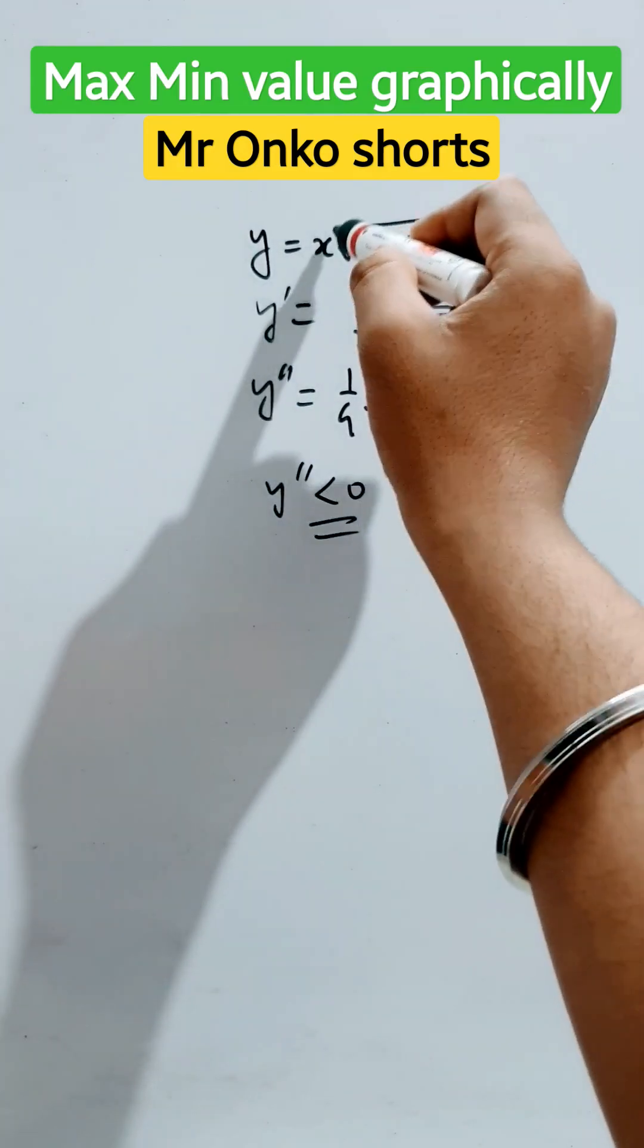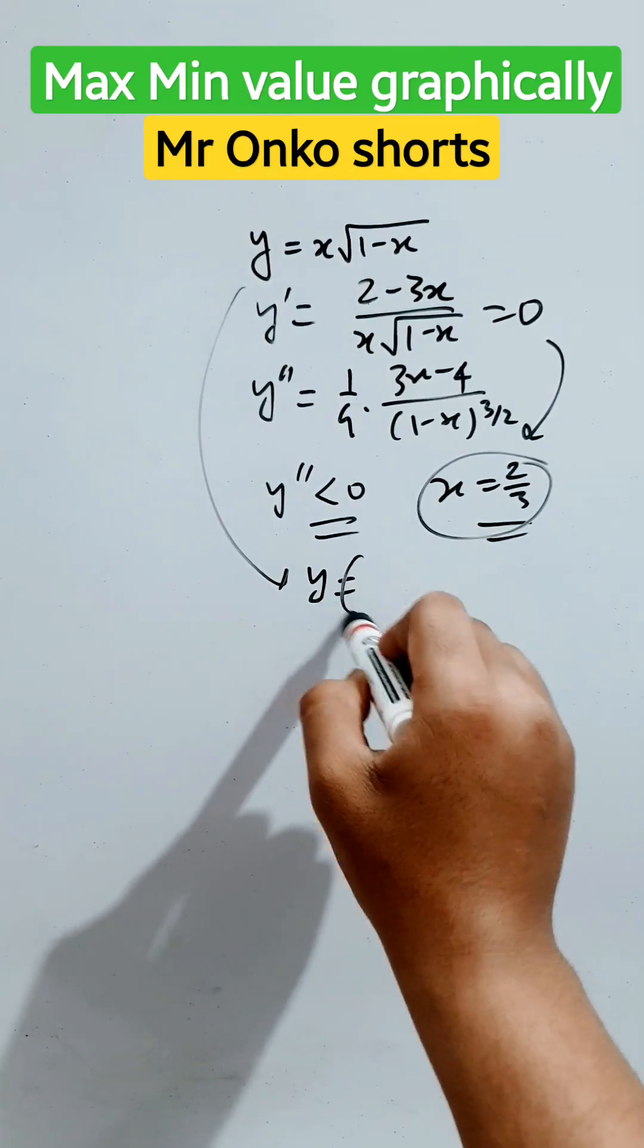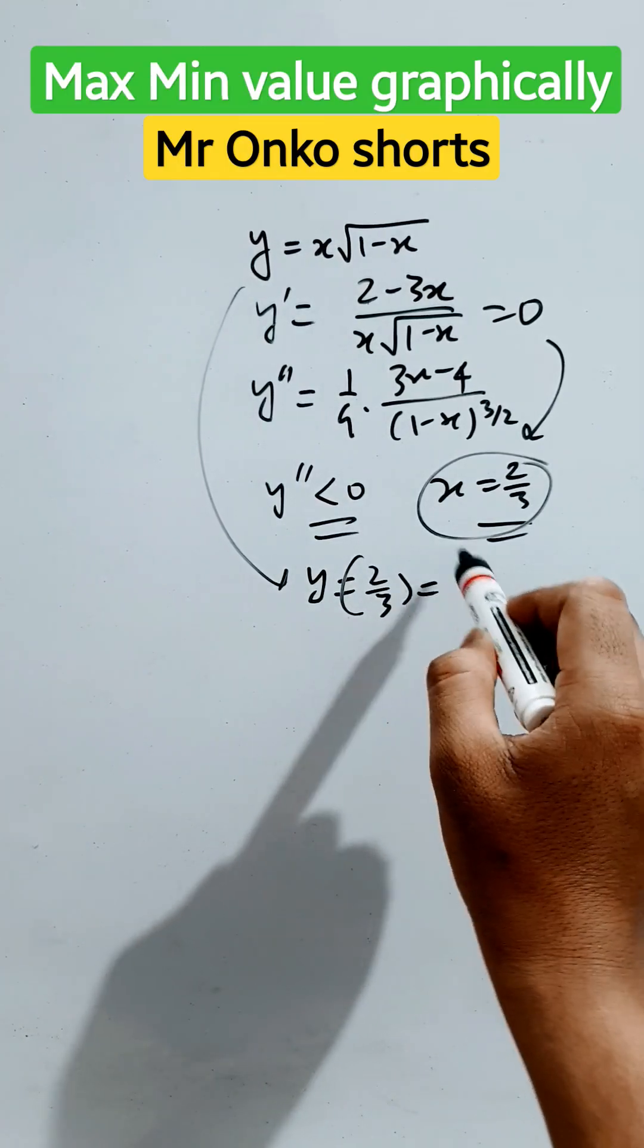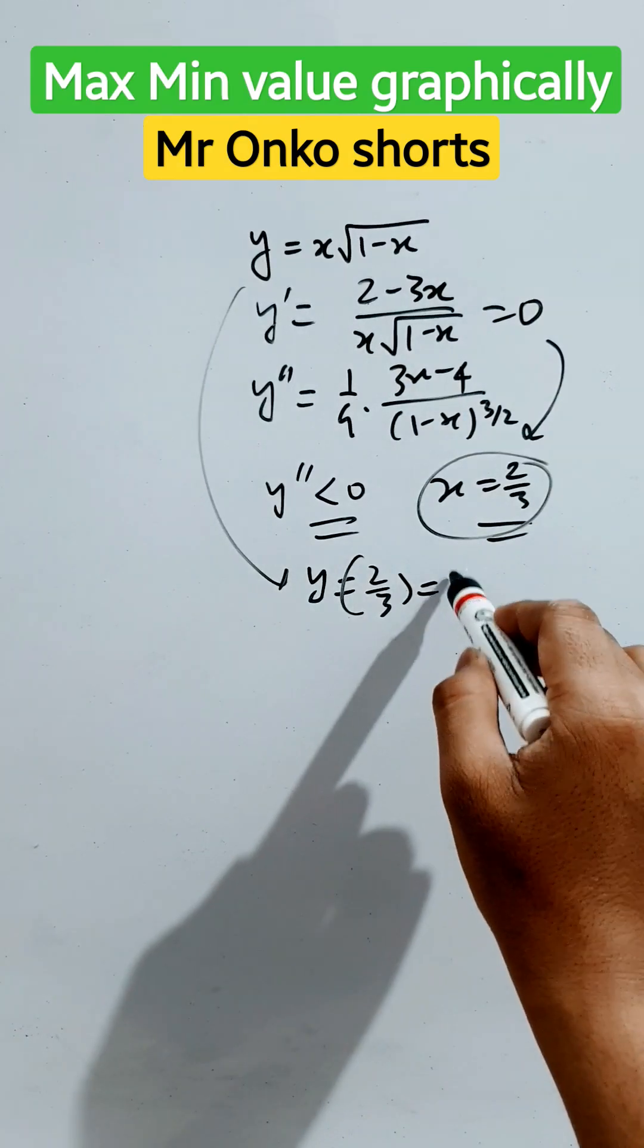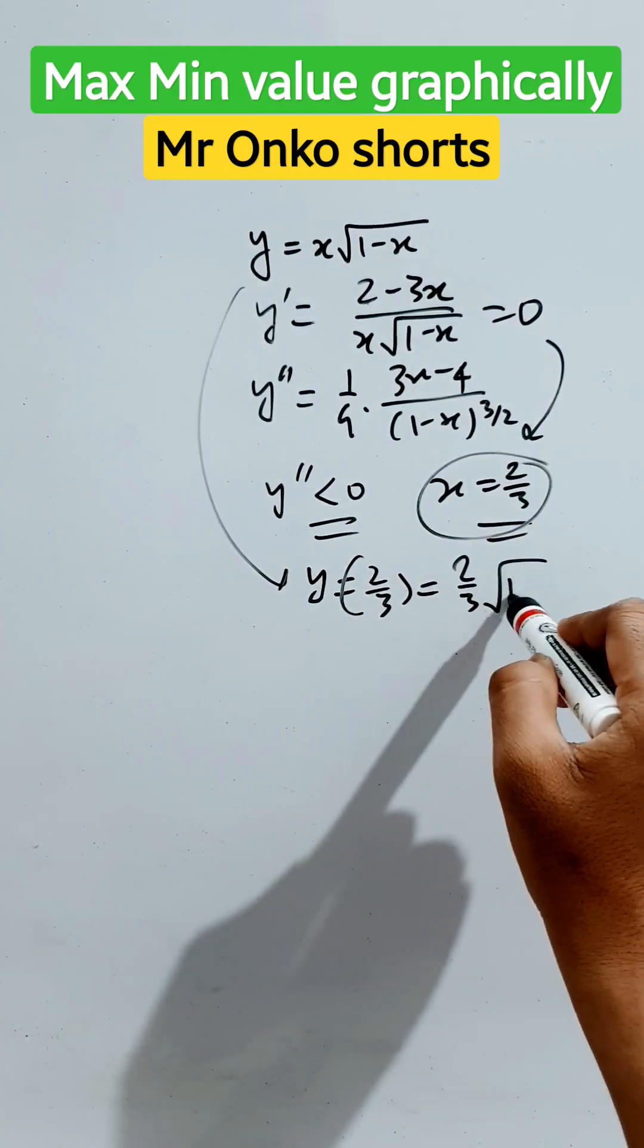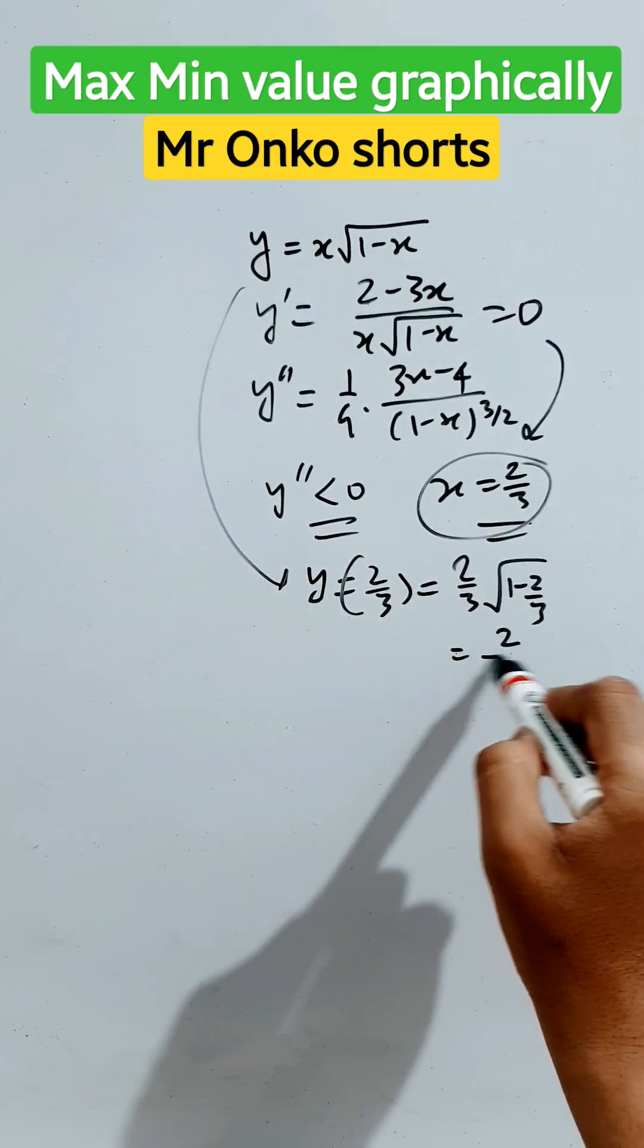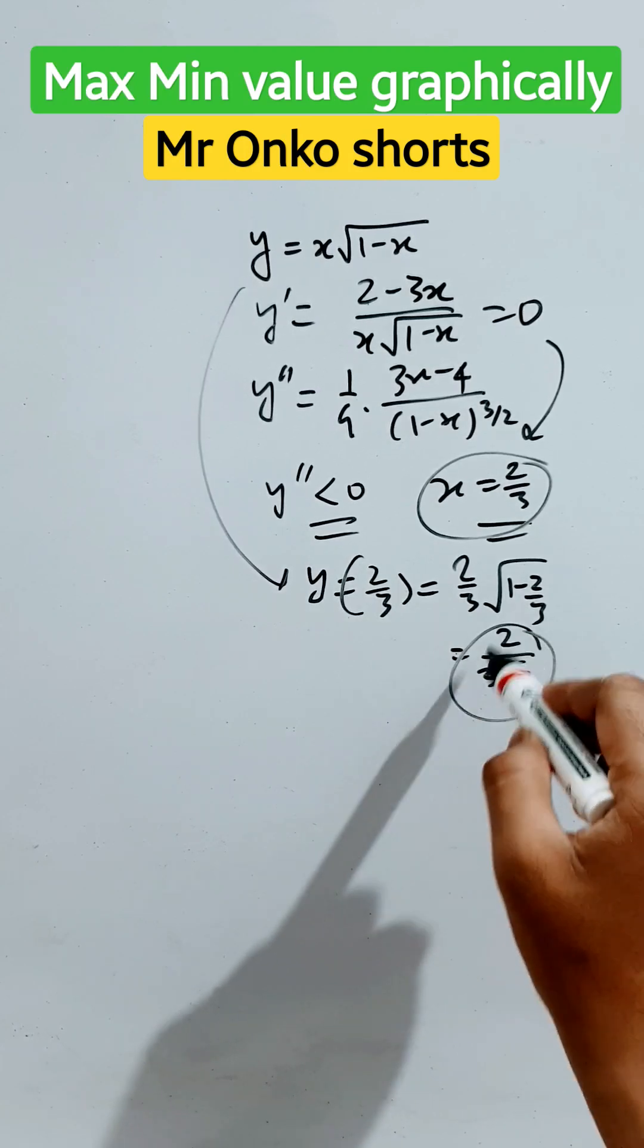If we put 2 by 3 here we will get the functional value that will be y of 2 by 3 will be equals to 2 by 3 into root over of 1 minus 2 by 3, it will be 2 by 3 root 3. This is the maximum value.